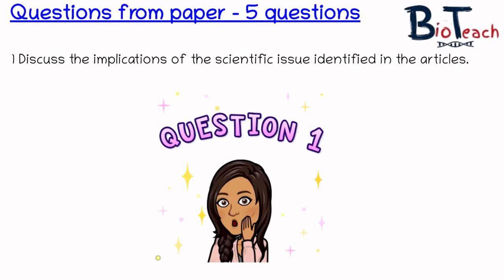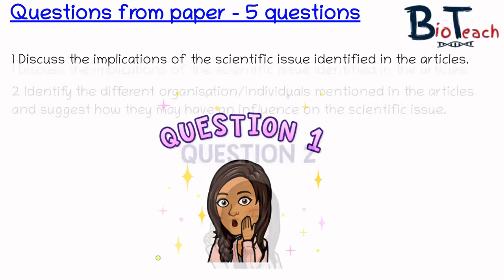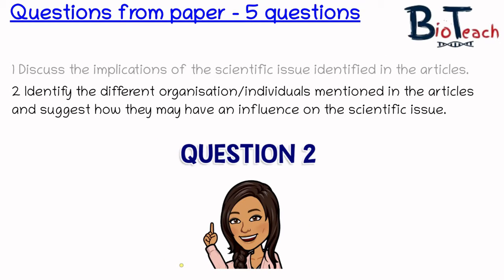As a reminder, question one is always to discuss the implications of the scientific issue identified in the articles. This is where you'll talk about the social, economic, perhaps even political, environmental, and ethical implications of the scientific issue. Question two is always to identify the different organisations or individuals mentioned in the three articles and to suggest how they may have an influence on the scientific issue.